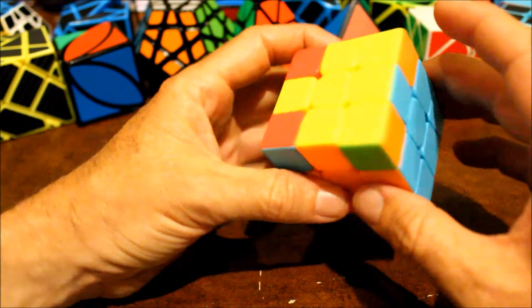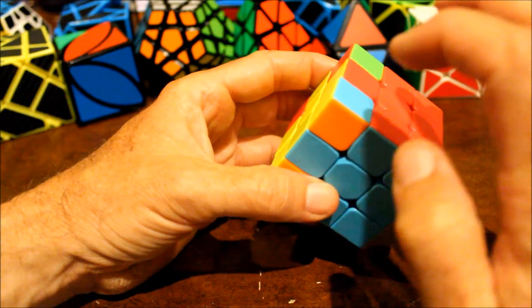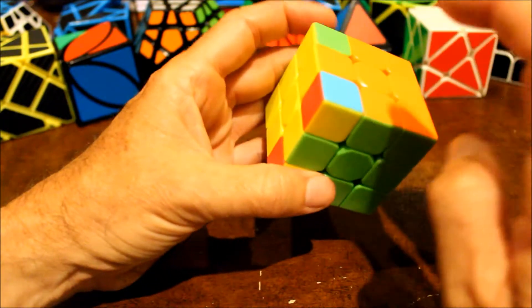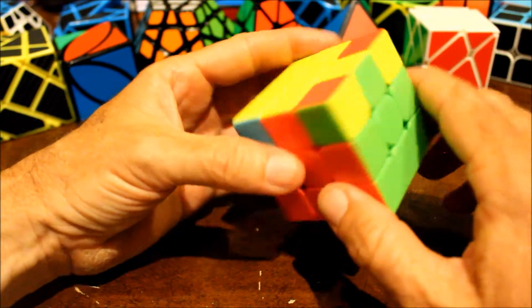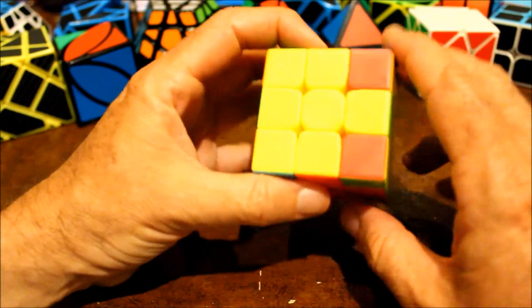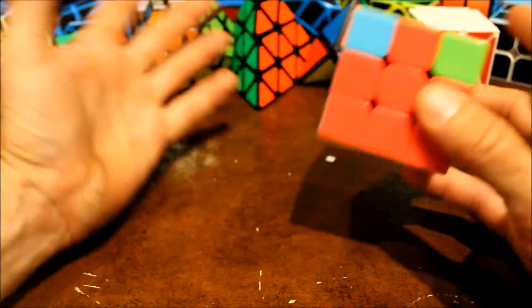And then look to see where you're at. That one's wrong, that one's wrong, this one's right, and that one's wrong. So we have one right and then again put that in the top right and do the same algorithm again.